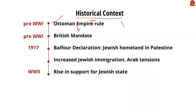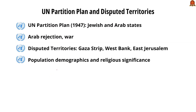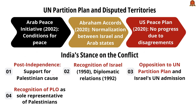The Balfour Declaration saw the British government support the idea of a Jewish homeland in Palestine, leading to more Jewish immigration. During World War II and the Holocaust, support for the Jewish community grew significantly. Britain then handed over Palestine to the United Nations due to difficulties in governing it. The UN proposed a partition plan to create a Jewish and an Arab state. Jewish leaders accepted the plan, but Arab leaders rejected it, leading to further conflict.